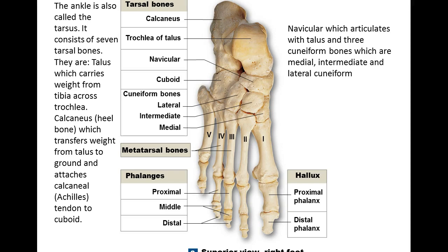Beyond the talus and calcaneus, the remaining five tarsal bones are the navicular, the cuboid, and the three cuneiform bones: lateral, intermediate, and medial, named based on their position. Beyond the cuneiforms, you have the metatarsals. The metatarsals and cuneiform bones make up the arch of the foot, which provides disparate distribution of weight. Beyond the metatarsals, the bones of the toes are the phalanges — just like the fingers. The great toe, or hallux, has proximal and distal phalanges, while the other toes have proximal, middle, and distal.